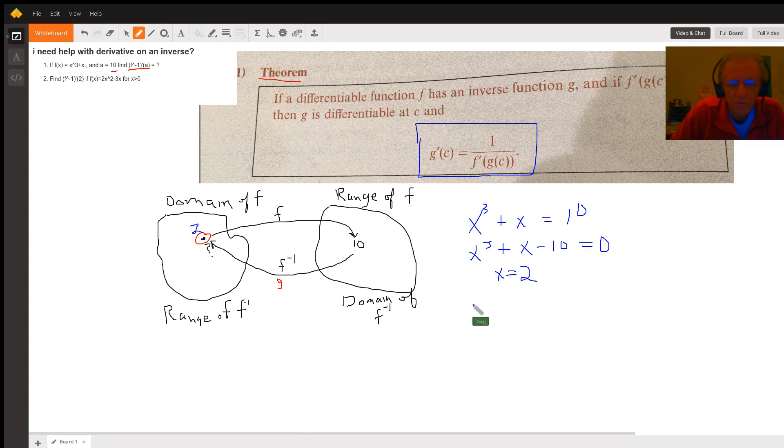Okay, so we're supposed to find f inverse prime of 10. And according to the theorem, we can do that by putting 1 over f prime of g of 10. But what is g of 10?